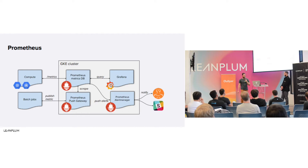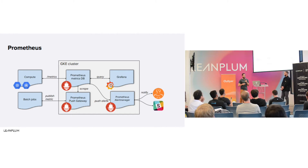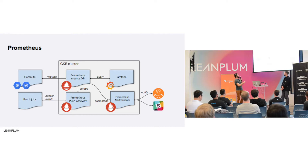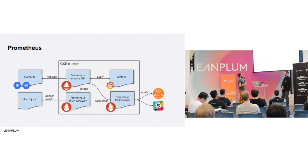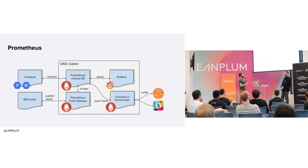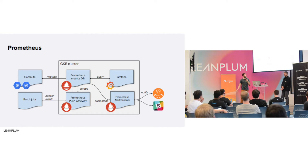This is a general diagram of how Prometheus works and how we use it for our new services. Whenever we build a new service now, we do it in Kubernetes instead of App Engine. On the left side we have all our compute instances — either Google Compute Engine VMs or Kubernetes pods. All those services expose a /metrics endpoint which gets scraped by Prometheus. Then from Prometheus, we use Grafana — an open source dashboard plotting tool — which queries Prometheus and fetches all the metrics needed for your dashboard.